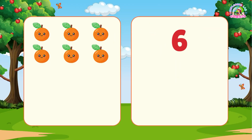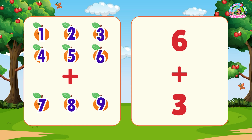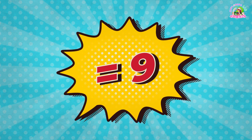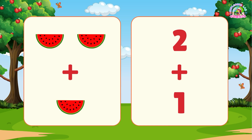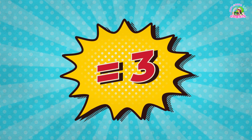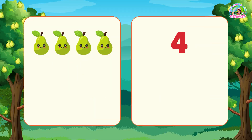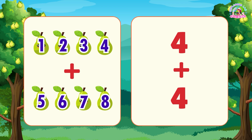I picked six oranges and then added three more to my basket. How many oranges are there now? Nine. There are two watermelons and I buy one more. How many watermelons do I have? Three. I see four pears on one tree and four on another tree. How many pears are there in total? Eight.